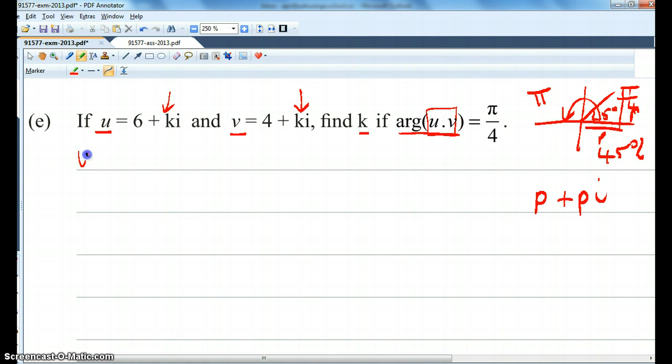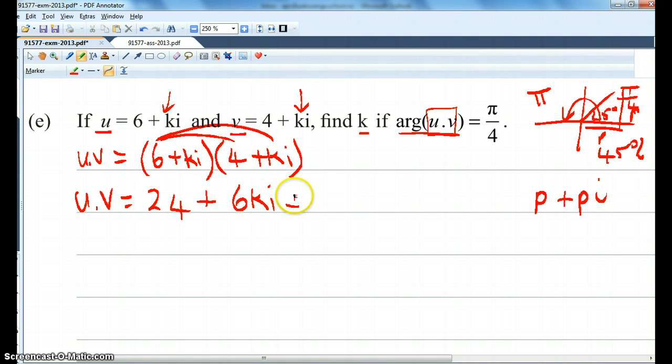Okay, so what's u times v? u times v equals 6 plus ki times 4 plus ki. So u times v equals 6 squared is 24 plus 6ki plus 4ki plus k squared i squared.